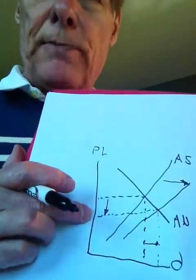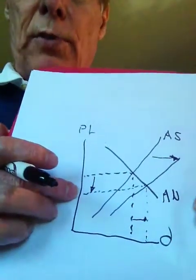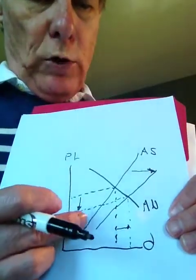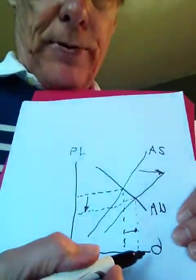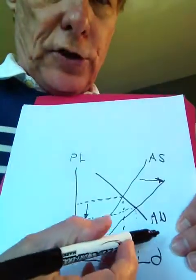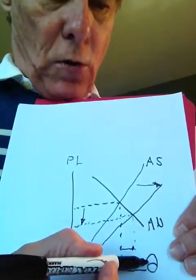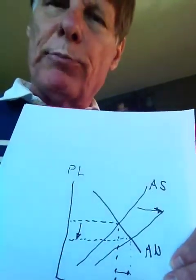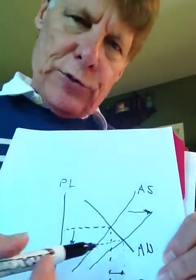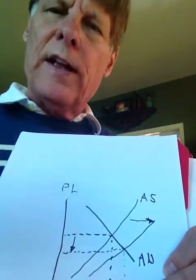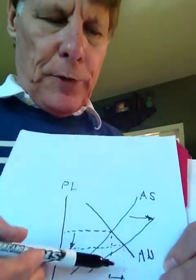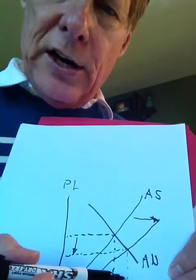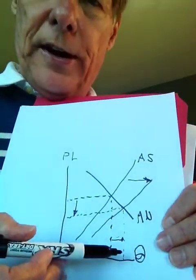A falling price level increases our real income — it increases the purchasing power of our income and our savings. A falling price level makes us all richer. The equilibrium level of output goes up, more goods and services are produced, and unemployment goes down. So this rightward-shifting aggregate supply curve shows the best of both worlds: a falling price level and an increasing level of output.